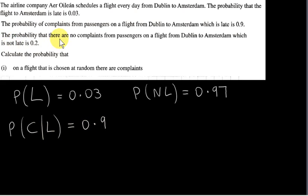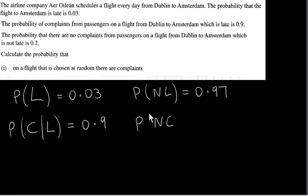The probability that there are no complaints from passengers on a flight from Dublin to Amsterdam which is not late is 0.2. I will let NC be the event of no complaints on a flight from Dublin to Amsterdam. So we are given that the probability of no complaints on a flight from Dublin to Amsterdam, given that the flight is not late, is 0.2.